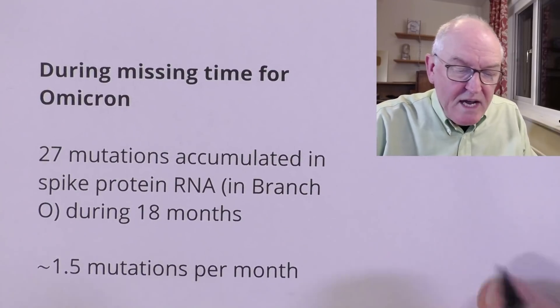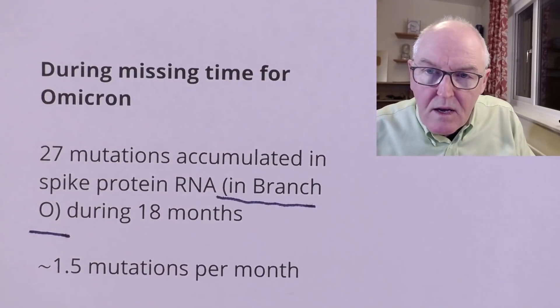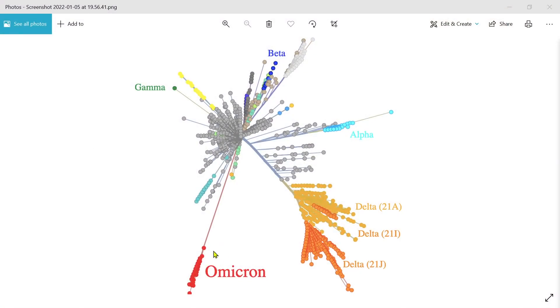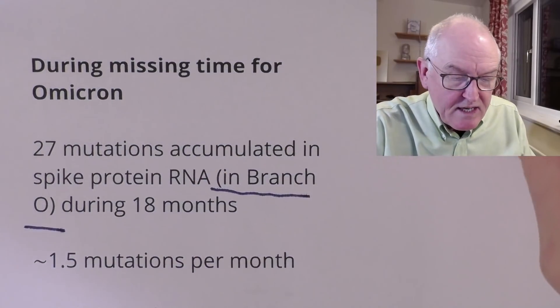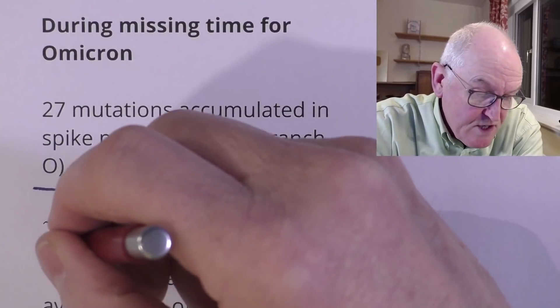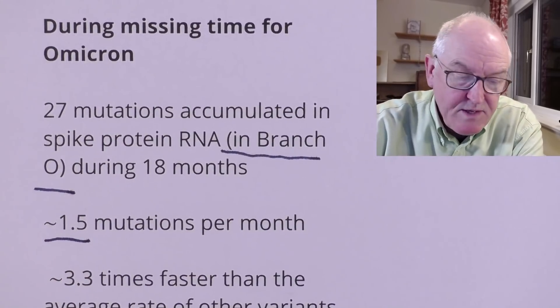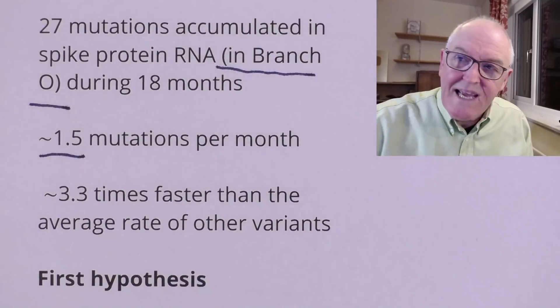The period where the history of Omicron is unknown is called Branch O. This is the hidden past of Omicron that seemed to spring out of nowhere — we don't know where it came from. But it accumulated mutations quickly. Instead of 0.5 mutations per month, it averaged 1.5 mutations per month — three and a half times faster than the average rate of other variants.